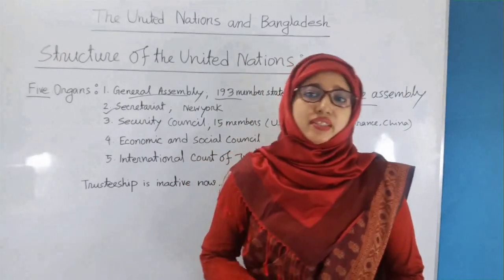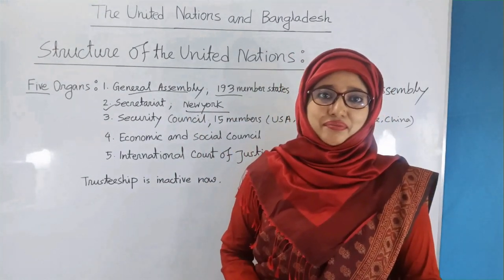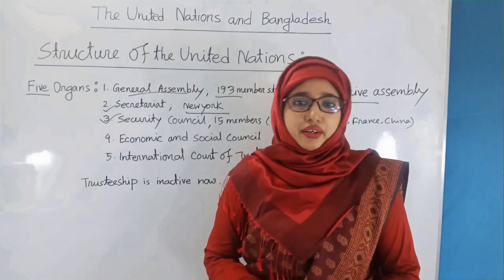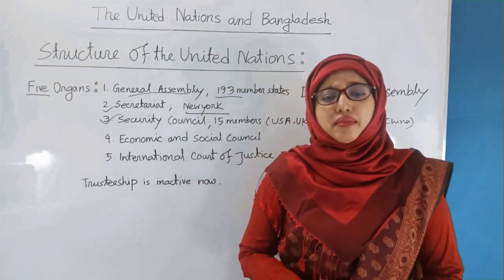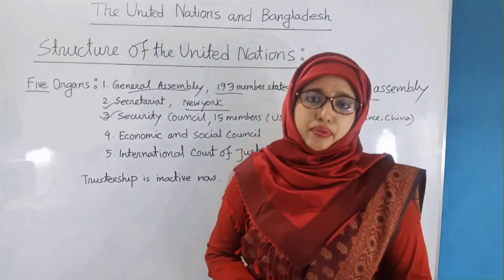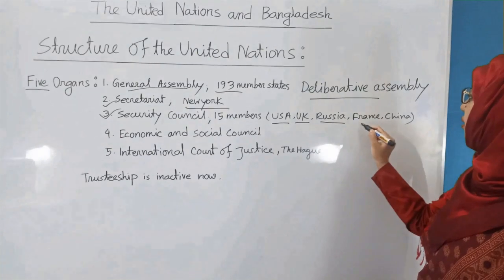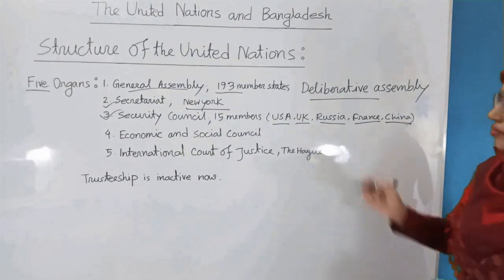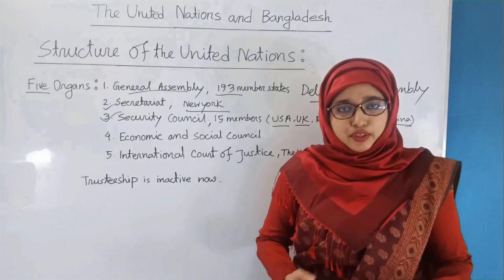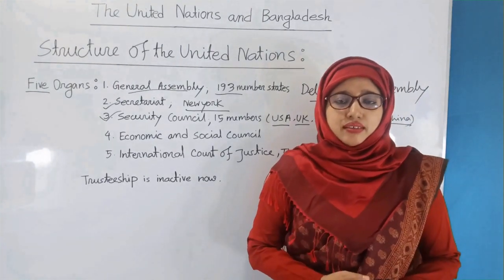The Secretariat of the United Nations is seated in New York City, United States of America. The Security Council is the most important organ of the United Nations. There are 15 member states; out of these 15, five member countries are permanent. These five countries are USA, UK, Russia, France, and China. These five member countries have a special power named the veto power. They can nullify any decision by exercising their veto power.